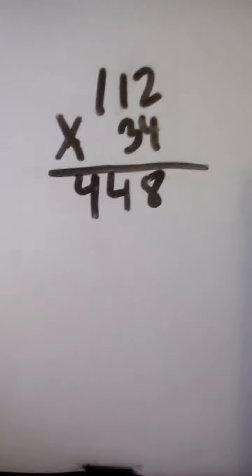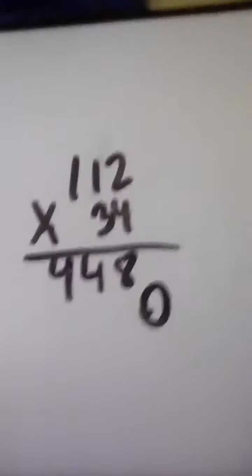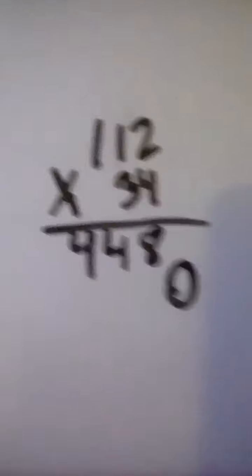Okay, now we have to bring a zero down to here. And 3 times 2...3 times 2 is 6.